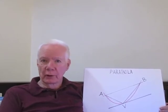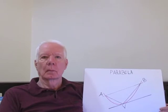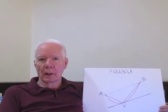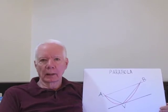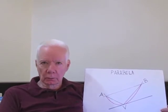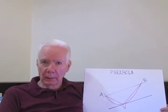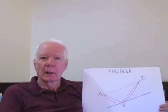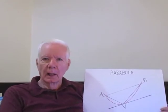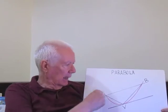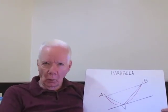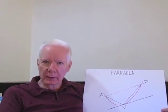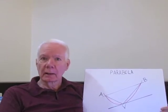Now, let's do some geometry. Areas. We know the area of a square, a triangle, even a circle. What about a parabola? This curve is a parabola, and I have drawn in a line, AB, called the chord, and this gives us a parabolic segment, and we can find the area.